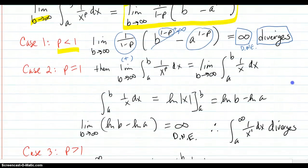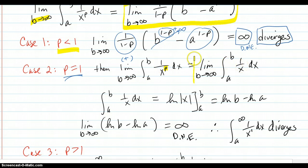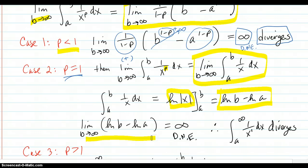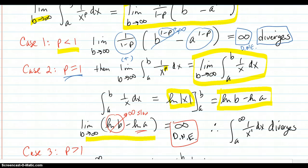Case 2: p equal to 1. We treat that a little differently. For p equal 1, you get the integral from a to b of 1 over x, which is log of x — since a is greater than 0, all values are positive, so it's just log of x. That evaluates to log b minus log a. As b goes to infinity, log of b moves to infinity slowly, but it does go to infinity. This other part is just a number, so again the limit goes to infinity and does not exist. The integral of 1 over x diverges.